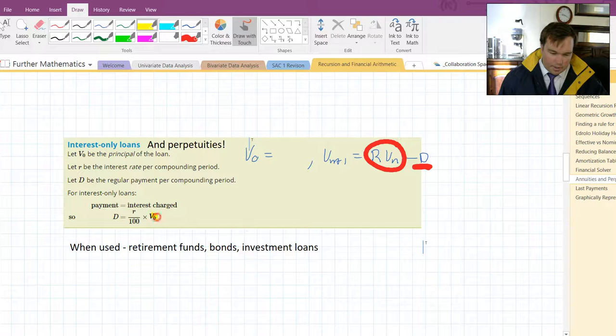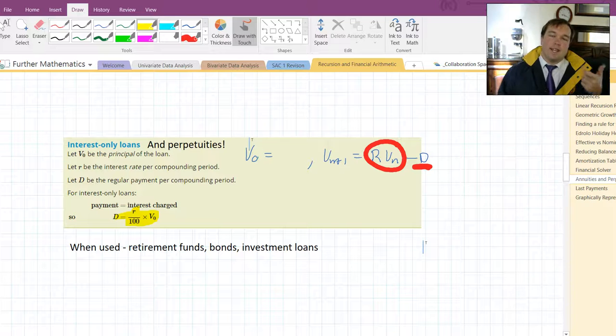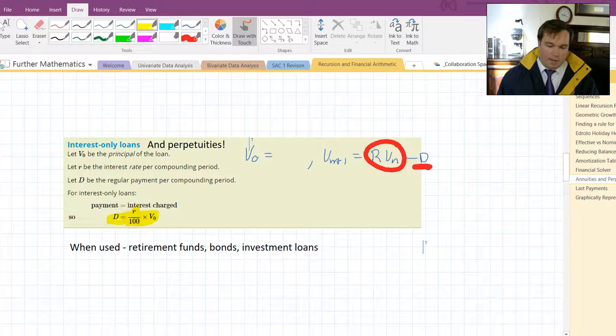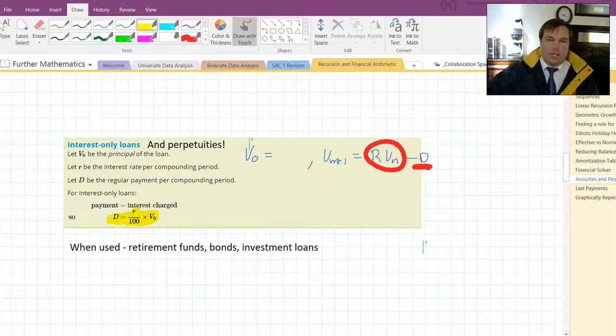Very importantly is this formula here. R on 100 times V0 is the amount of interest earned in a period, whereas D is the amount subtracted from that period. When these two are equal, it will be a perpetuity. If they're unequal, then the fund will either grow or decrease over time.